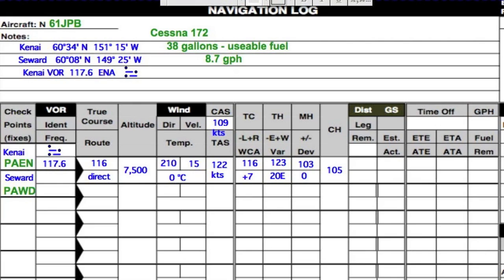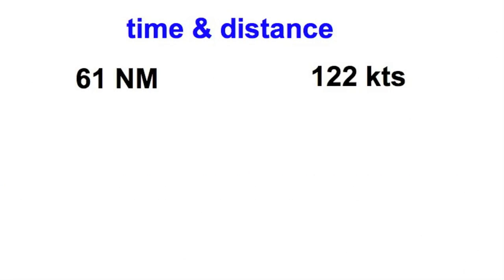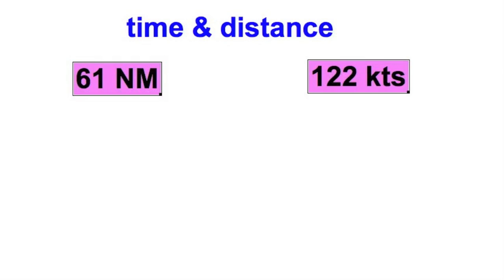Earlier we measured the length of this leg: 61 nautical miles. Suppose hypothetically I want to take off at 1100 hours local time, since we're not in Class A airspace. Our fuel burn is 8.7 gallons per hour. For estimated time en route, we can use the E6B or a conventional calculator. A surefire method is dimensional analysis: I want to end up with a unit of time.